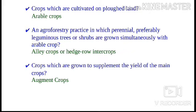Crops which are grown to supplement the yield of the main crop are known as augment crops. An example of augment crops is Japanese mustard with berseem, where the mustard helps in getting higher tonnage of fodder in spite of the fact that berseem gives poor yield in the first cutting.